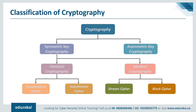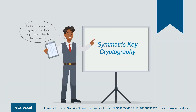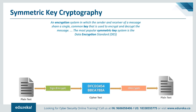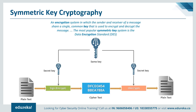Let's start with symmetric key cryptography first. Symmetric key algorithms are algorithms for cryptography that use the same cryptographic keys for both encryption of plain text and decryption of cipher text. The keys may be identical or there may be a simple transformation to go between the two keys. The keys in practice represent a shared secret between two or more parties that can be used to maintain a private information link. This requirement that both parties have access to the secret key is one of the main drawbacks of symmetric key encryption in comparison to public key encryption, also known as asymmetric key encryption. Symmetric key cryptography is sometimes also called secret key cryptography, and the most popular symmetric key system is the Data Encryption Standard, which stands for DES.